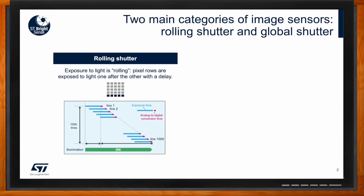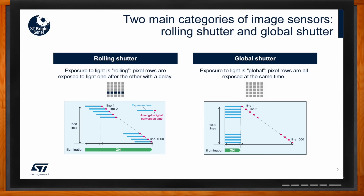The principle of rolling shutter is that you take the pixels line by line. As you can see on the left part of the slide, from the first line to the last line you get an offset of a couple of milliseconds, depending on the speed of the rolling shutter. This is fine for static images like a landscape, but for applications with moving objects where you need to capture fast movement, you need a global shutter sensor. With a global shutter, as shown on the right, all lines of pixels are captured at the very same time, resulting in a very static image regardless of the speed of the scene.